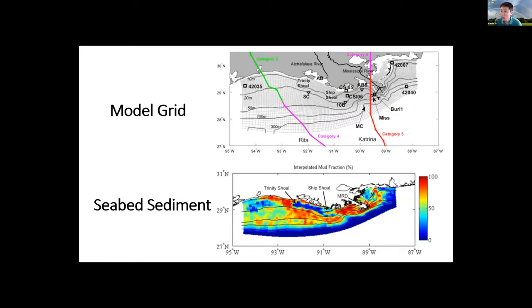Now let's take a look at the model setup. The top figure is the model grid, which was developed by Rob Hetland from Texas A&M. And you can actually see the passage of the track lines of two hurricanes. Here I'm using a red circle as a laser pointer. This is Hurricane Katrina, and this is Hurricane Rita.